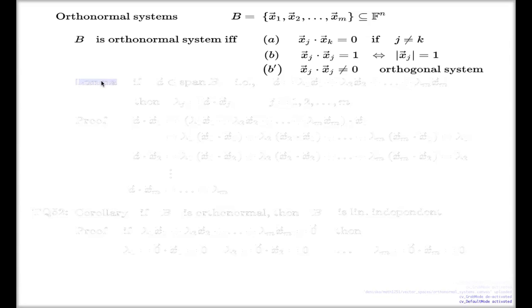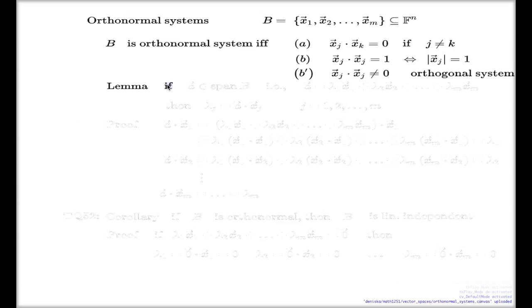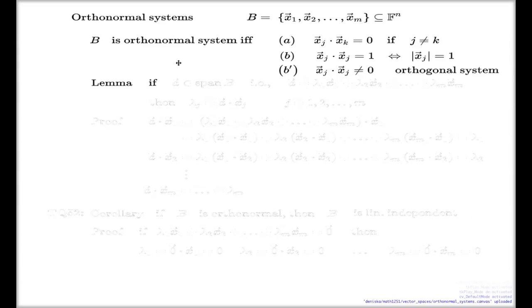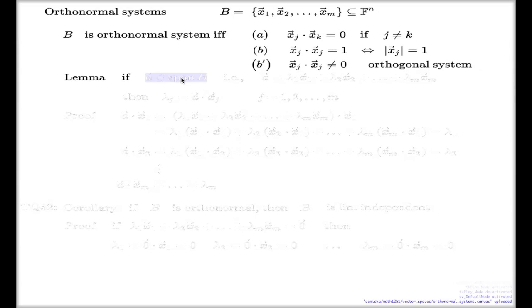Now, these are two results which normally must be remembered when you deal with orthonormal systems or orthogonal systems. Imagine you have a vector which comes from the span of the system B, from the orthonormal system, which means having something from a span means that this something is representable as a linear combination.